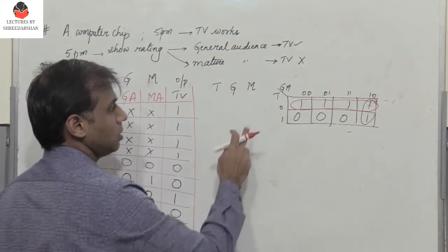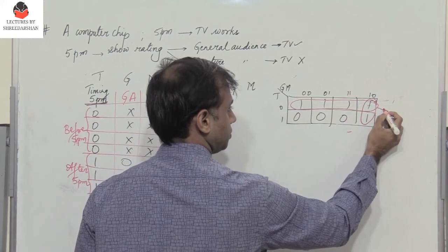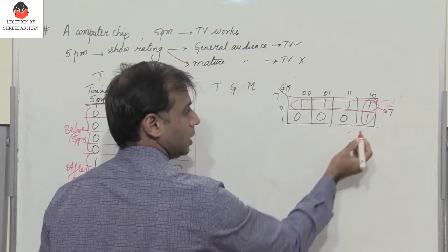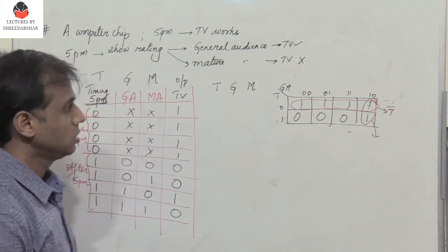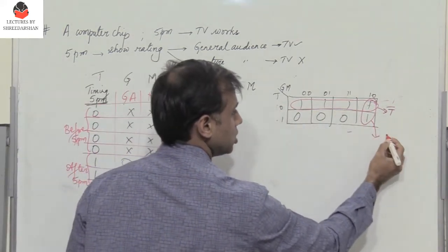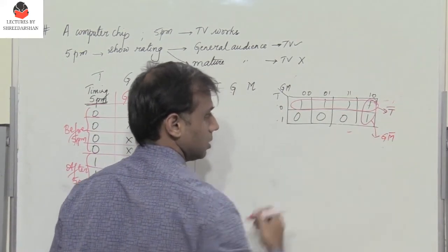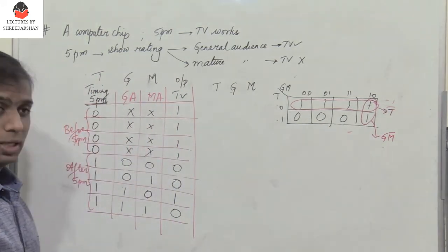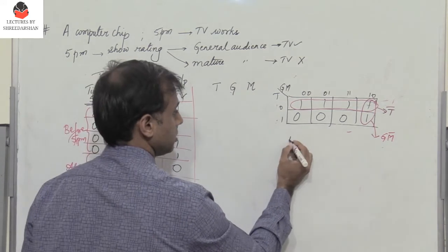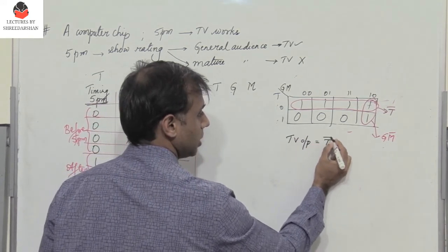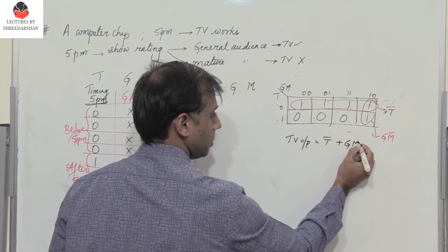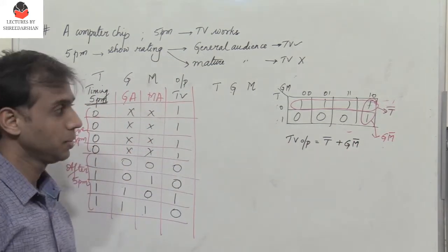When I combine these four ones I get t bar, and what about these two? So t is in complement, so therefore that gets eliminated. We get g m bar. How do we get the simplified expression? The simplified expression for the TV show output is nothing but t bar plus g m bar. It's as simple as that.